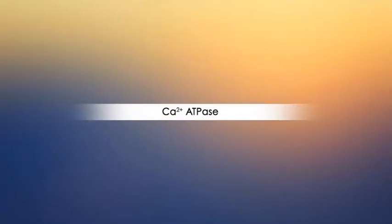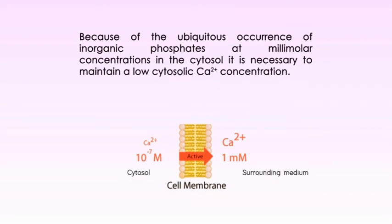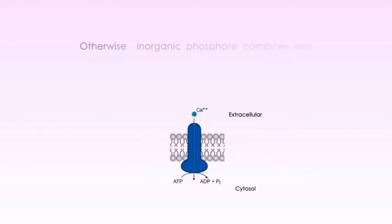Now let's look at the calcium ATPase. The cytosolic concentration of free calcium ions is far lower than that in the surrounding medium. Because of the ubiquitous occurrence of inorganic phosphates at millimolar concentrations in the cytosol, it is necessary to maintain a low cytosolic calcium ion concentration. Otherwise, inorganic phosphate combines with calcium to form relatively insoluble calcium phosphates. So calcium ions are pumped out of the cytosol by the P-type plasma membrane calcium ion pump. The activity of the plasma membrane pump is regulated by calmodulin, a calcium ion binding protein present in the cytosol. A rise in calcium ions in the cytosol triggers binding of calcium ions to calmodulin, which in turn triggers the activity of the plasma membrane calcium pump, accelerating the export of calcium ions and quickly restoring the low concentration of free cytosolic calcium ions.